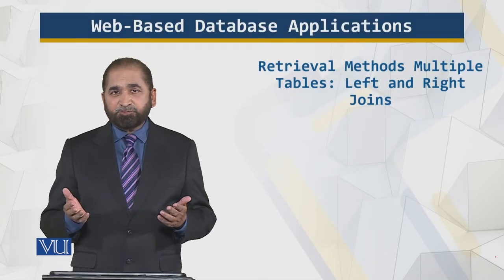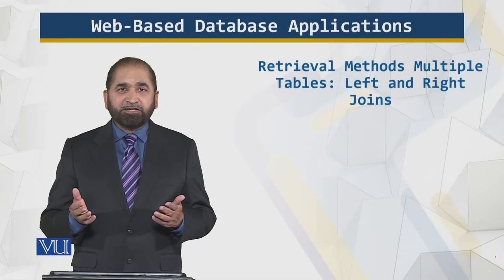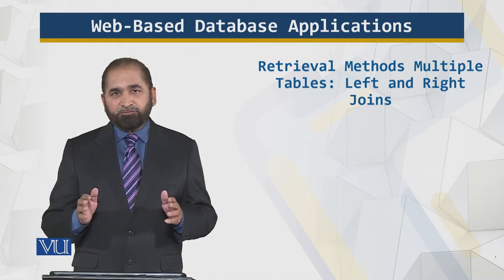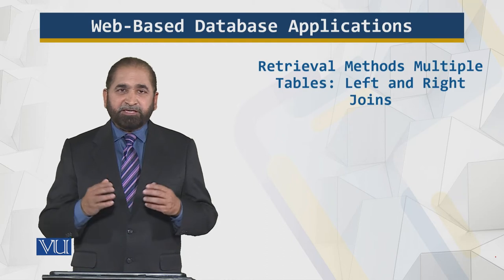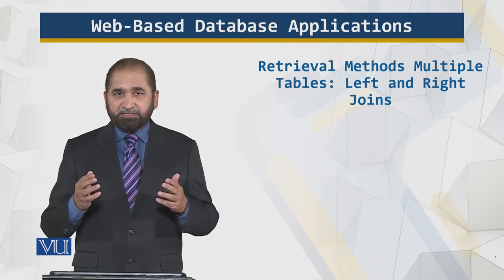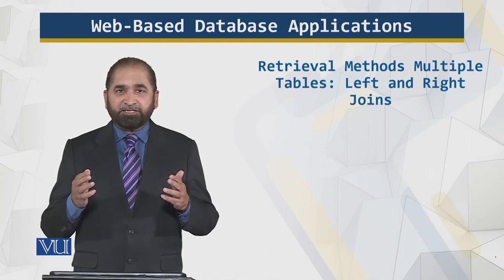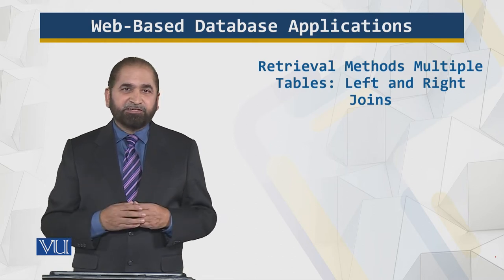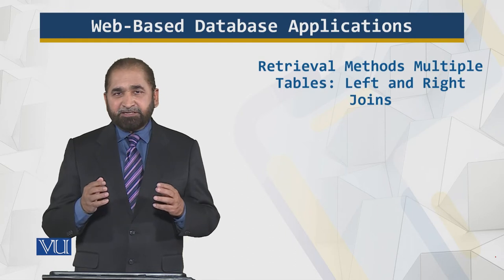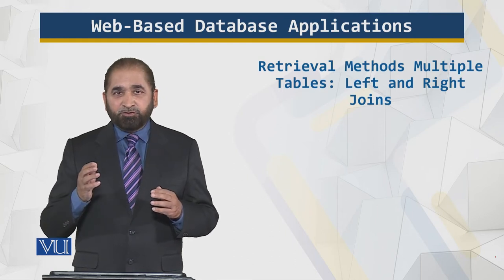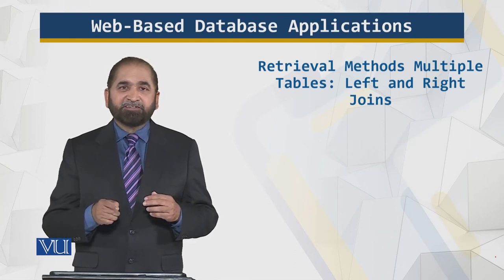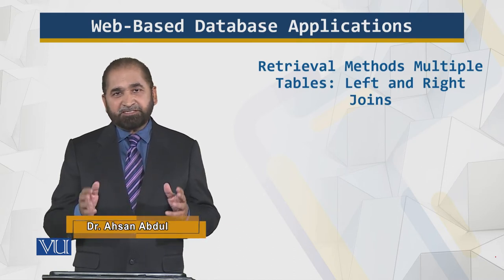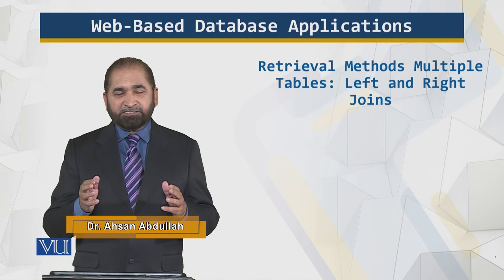So students, in this module we will look at a different type of join. We have looked before at equi join in which those rows are returned from the join tables which are matching, which have the matching field. But in the left and right join, those rows are also returned for which there is no match. There are many applications of this type of join.